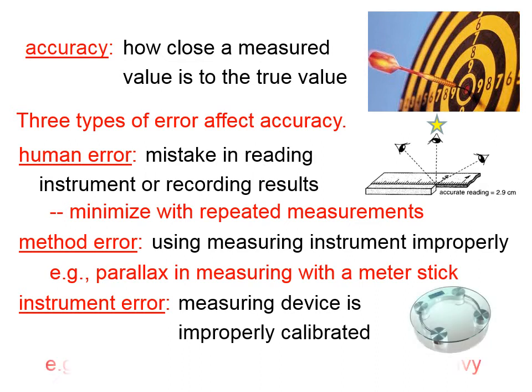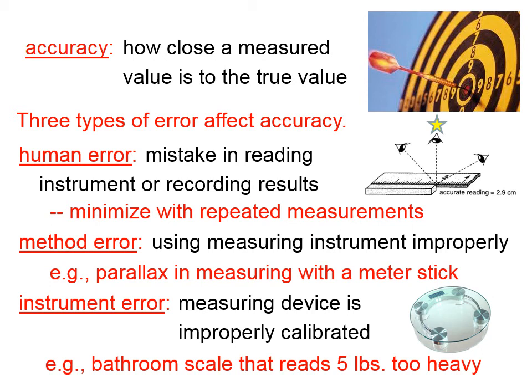A third type of error is instrument error. An instrument error means that your measuring device has been improperly calibrated, such as a bathroom scale that reads five pounds too heavy. It's nothing necessarily that you've done, but the instrument is simply off. You minimize that by taking proper care of your instrumentation.